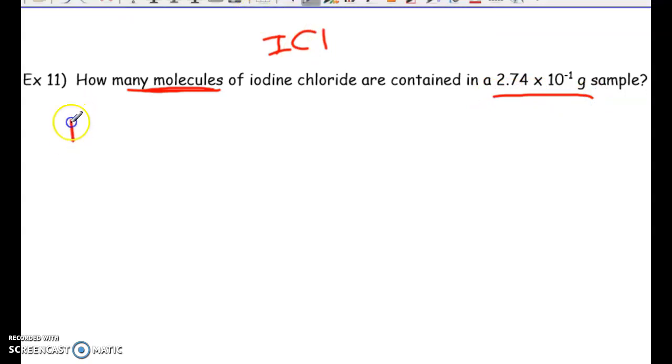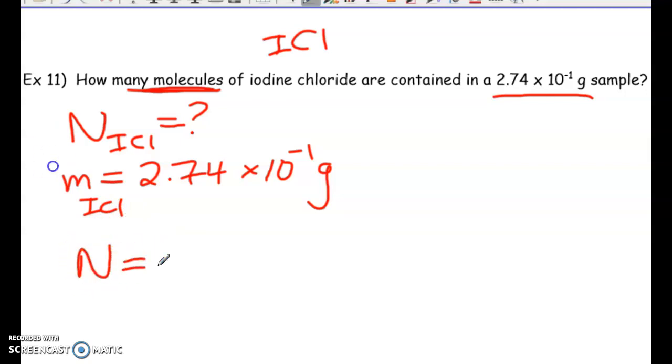All right, so let's take a look. So we're looking for the number of iodine chloride molecules. So we have the mass value, 2.74 times 10 to the negative 1 grams for iodine chloride. So we eventually want to get to, you know, N is equal to n times NA. But we first have to solve for moles, because we don't have enough information to solve for the molecules yet. So moles is going to be mass over the molar mass.